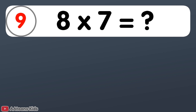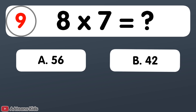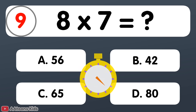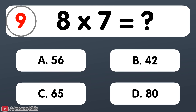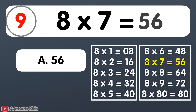8 times 7 is equal to... 56. 8 times 7 is 56.